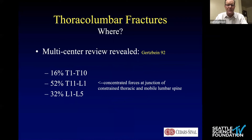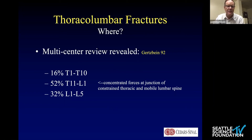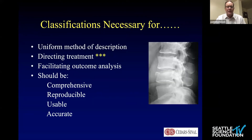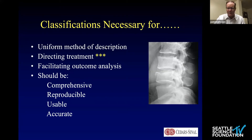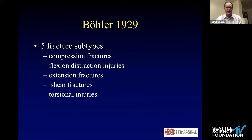Where do these injuries occur? They occur in the thoracic spine between T1 and T10 pretty infrequently. Most of them are at the thoracolumbar junction, and then the lower lumbar segments follow next in frequency. Why do we have classifications? We need a method of description, we have to be able to treat injuries, facilitate outcomes, and they should be comprehensive, reproducible, usable, and accurate.